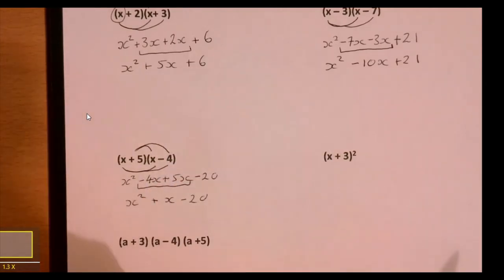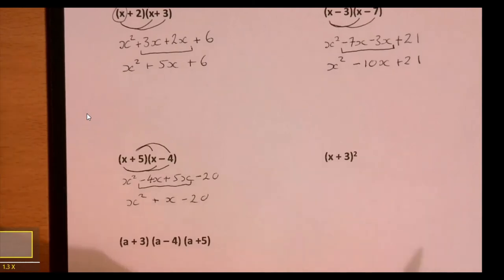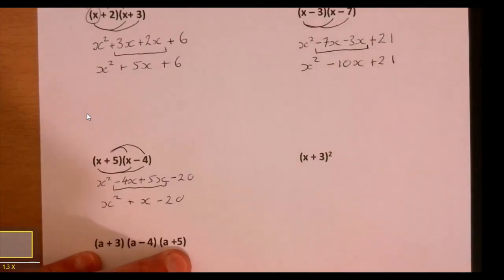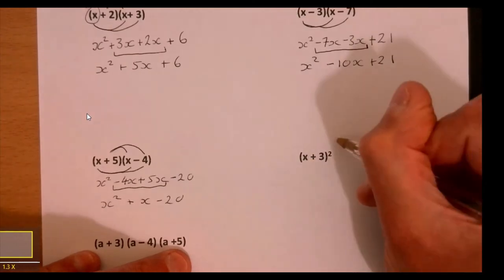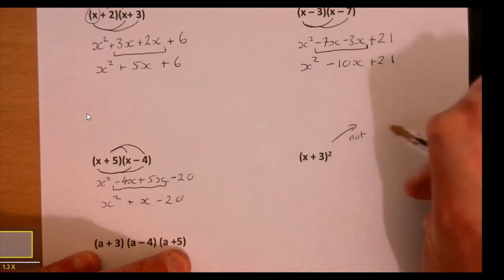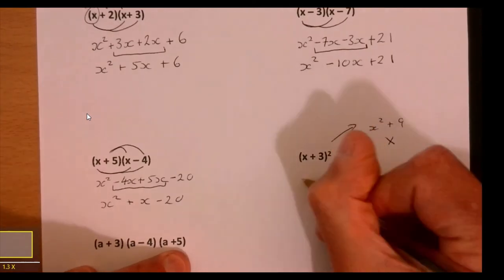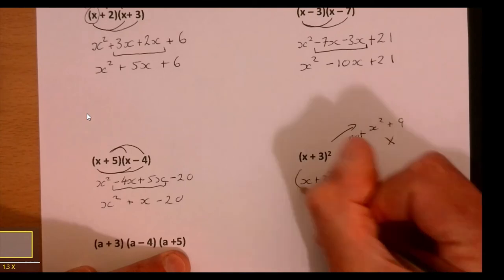Sometimes people get stumped by this. The answer is not just squaring each term - that's wrong. What does it mean when you square something? It means multiplied by itself.